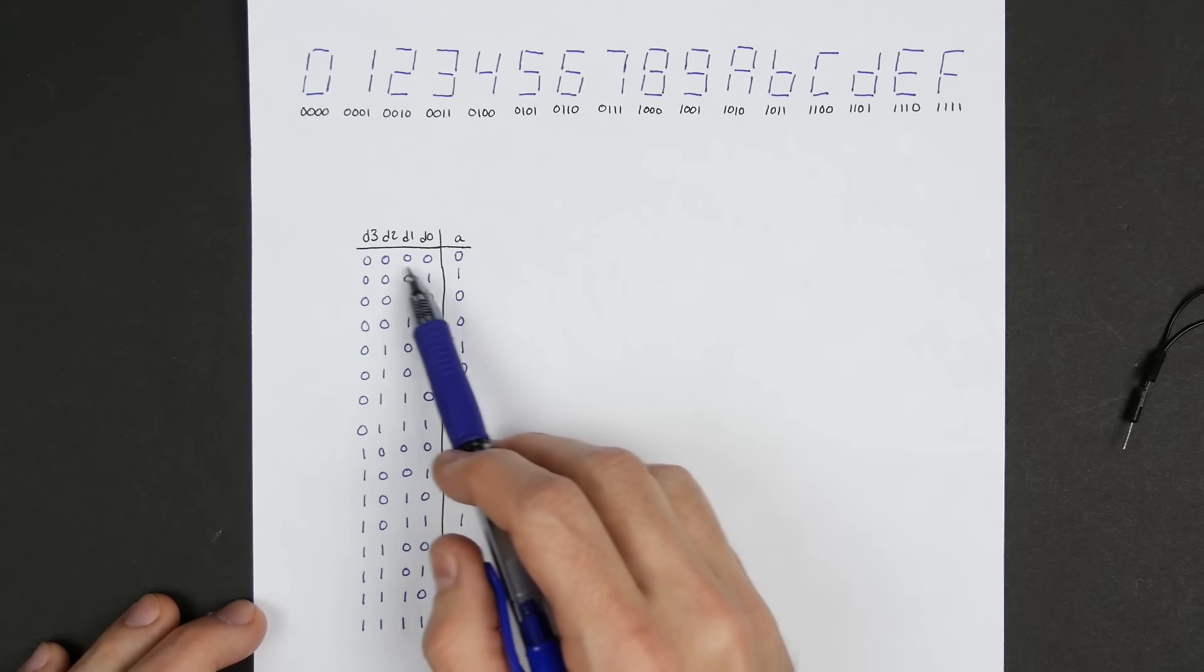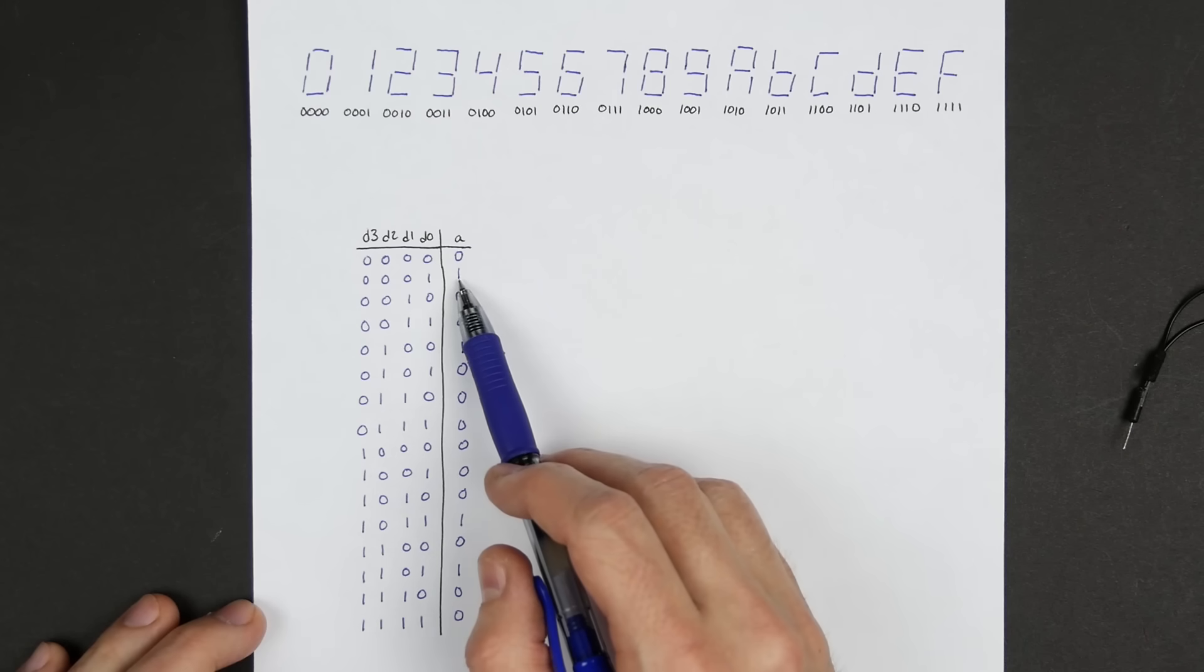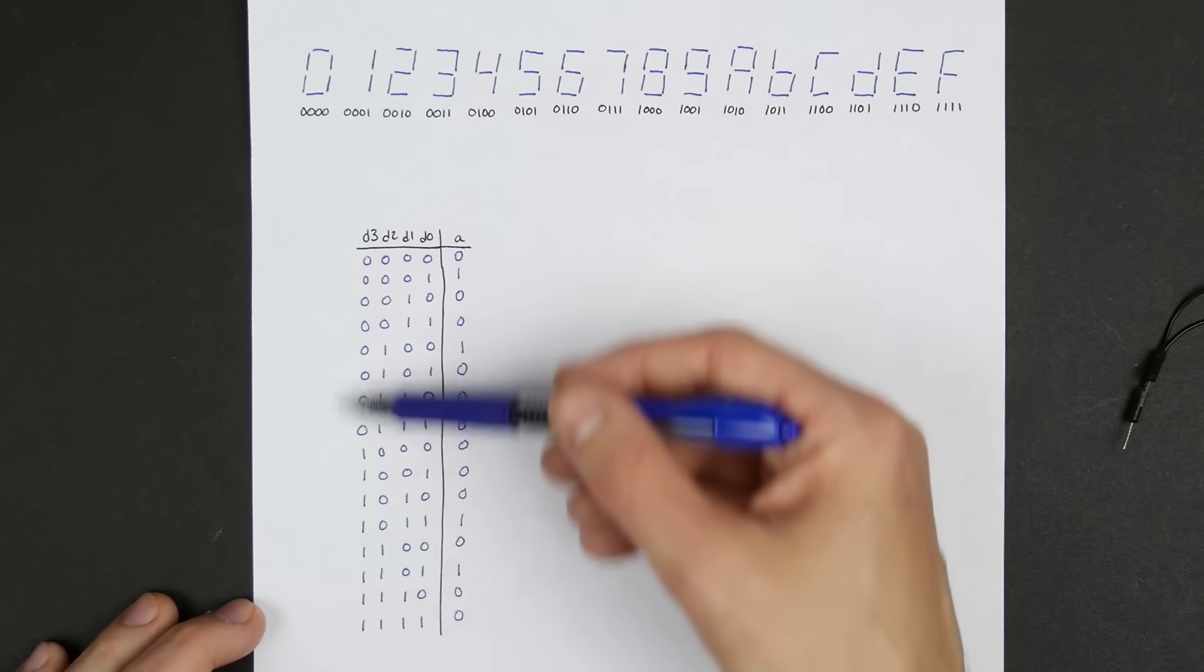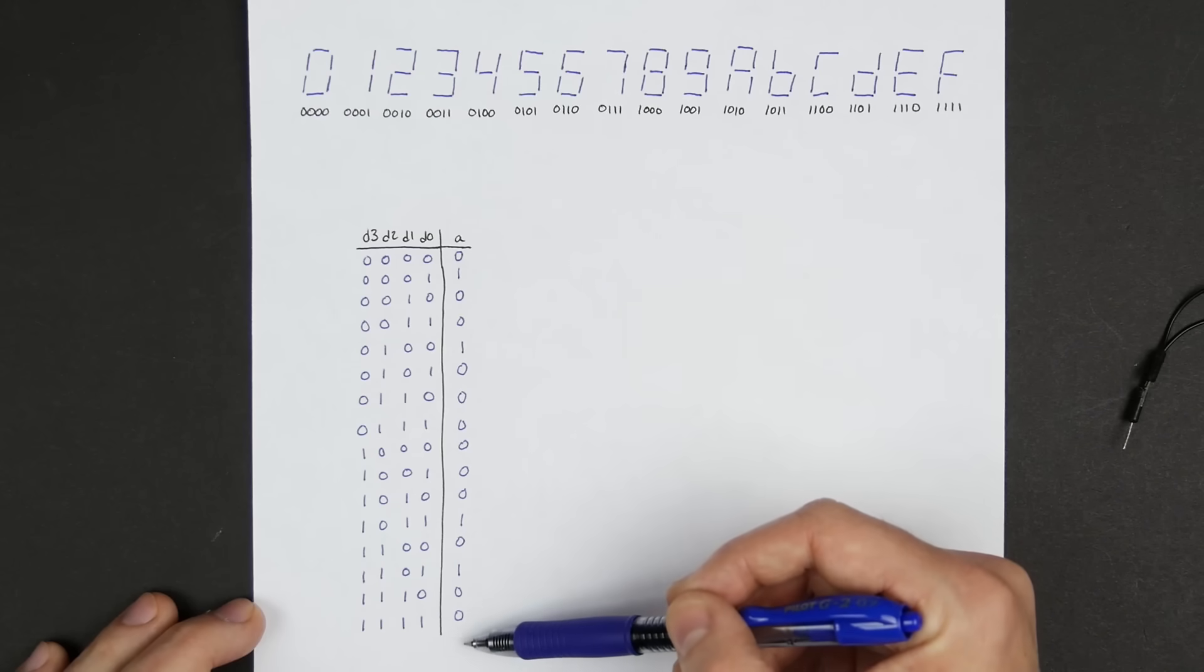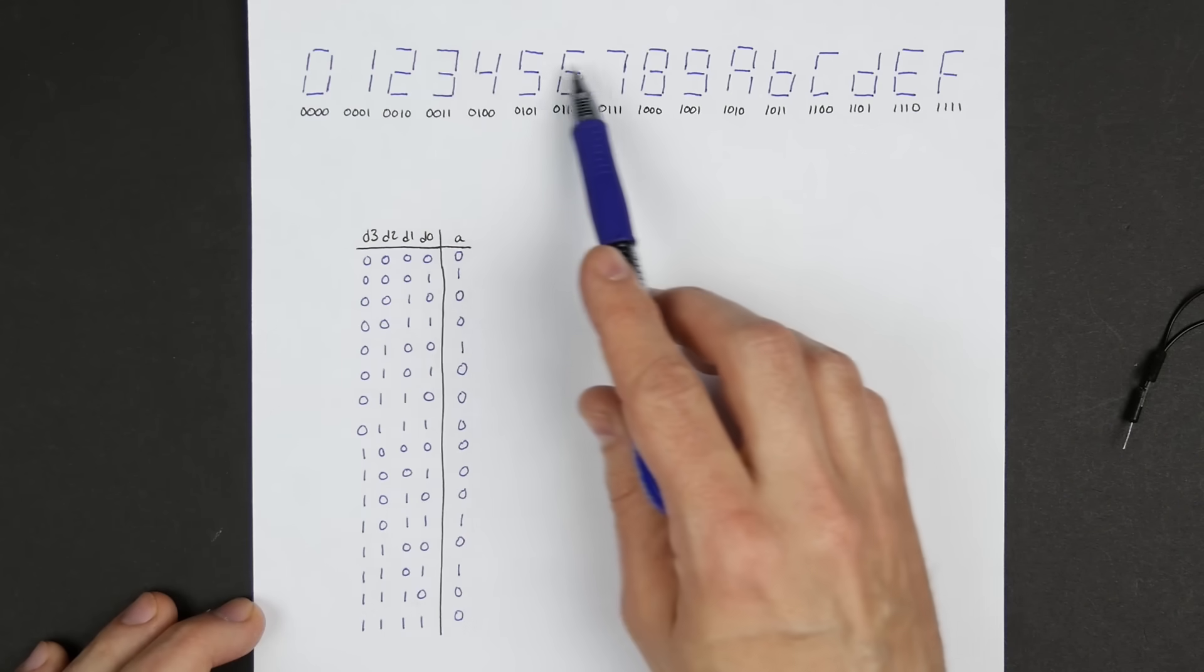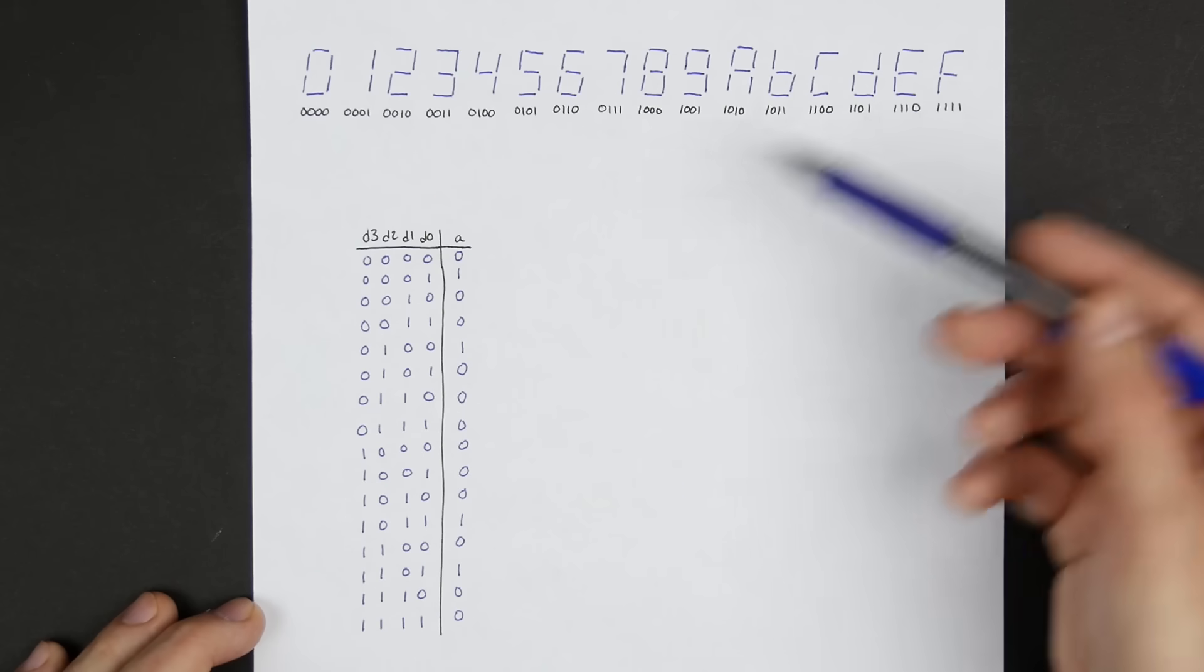And so what we've got here is a truth table that says if you have these inputs we want that output. It's another question becomes well can we build a circuit that satisfies this truth table, some kind of logic circuit. And if we can do that then that gives us the logic required to tell us when we should turn on that top segment and then we could do the same thing for the rest of the segments.